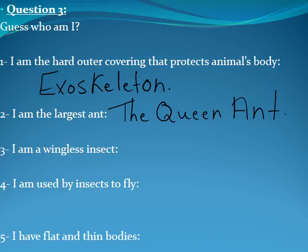Number three: I am a wingless insect — I am the lice. Can you give another example of wingless insects? Number four: I am used by insects to fly — I am the wings. Number five: I have flat and thin bodies — I am the flatworms.